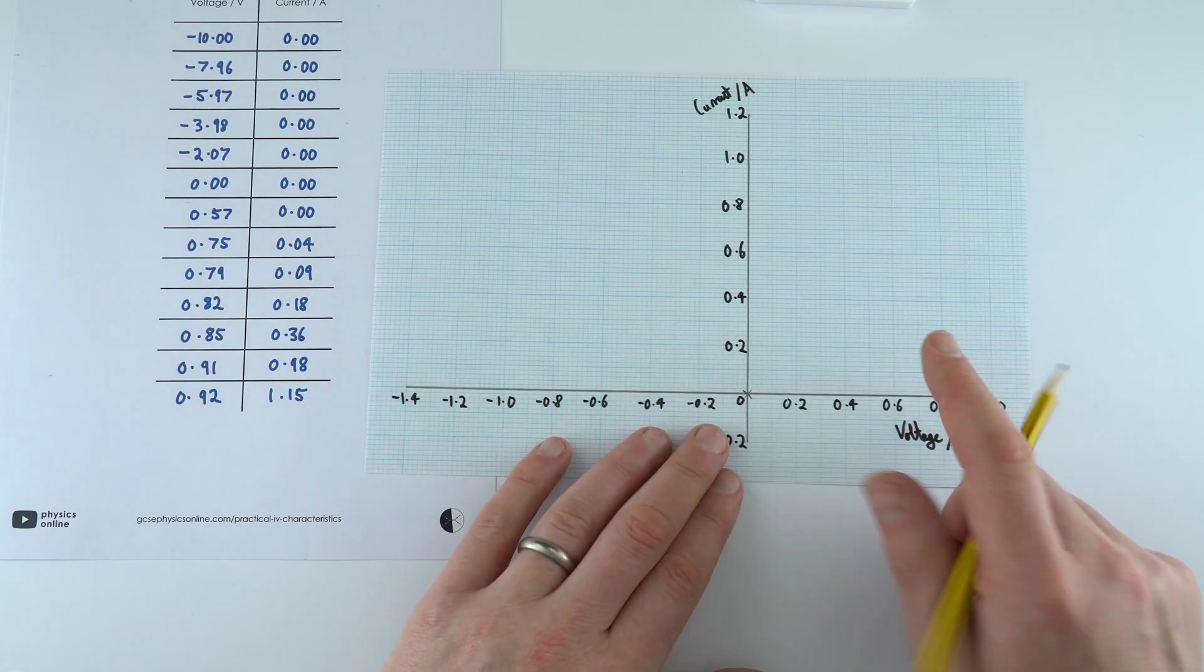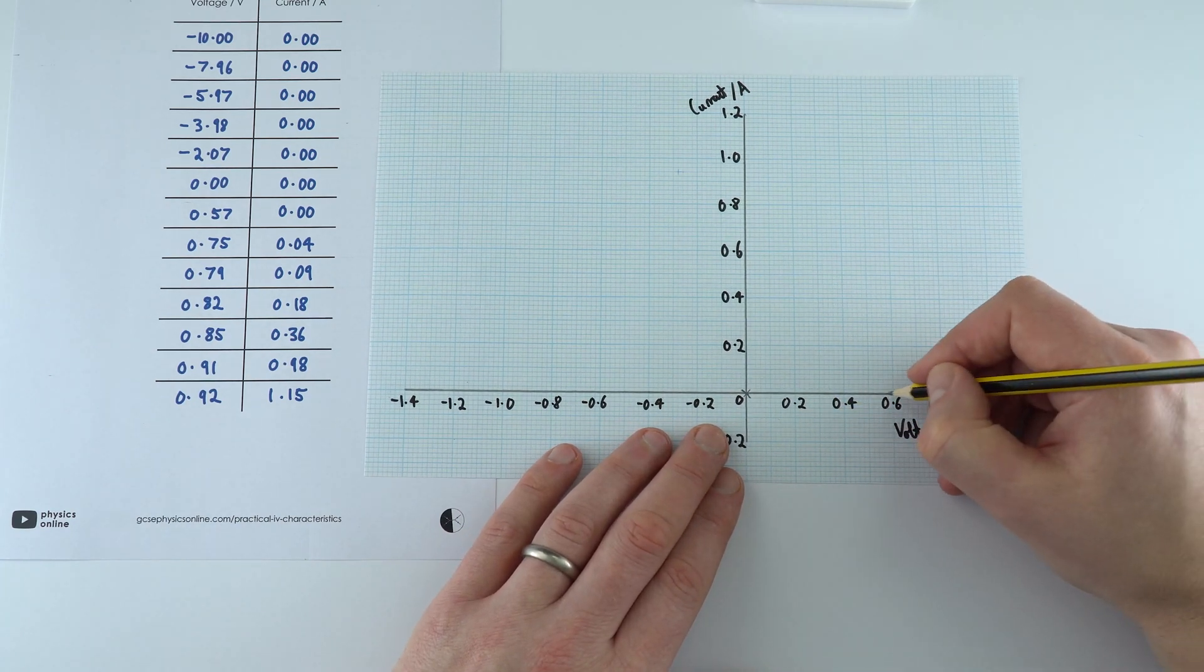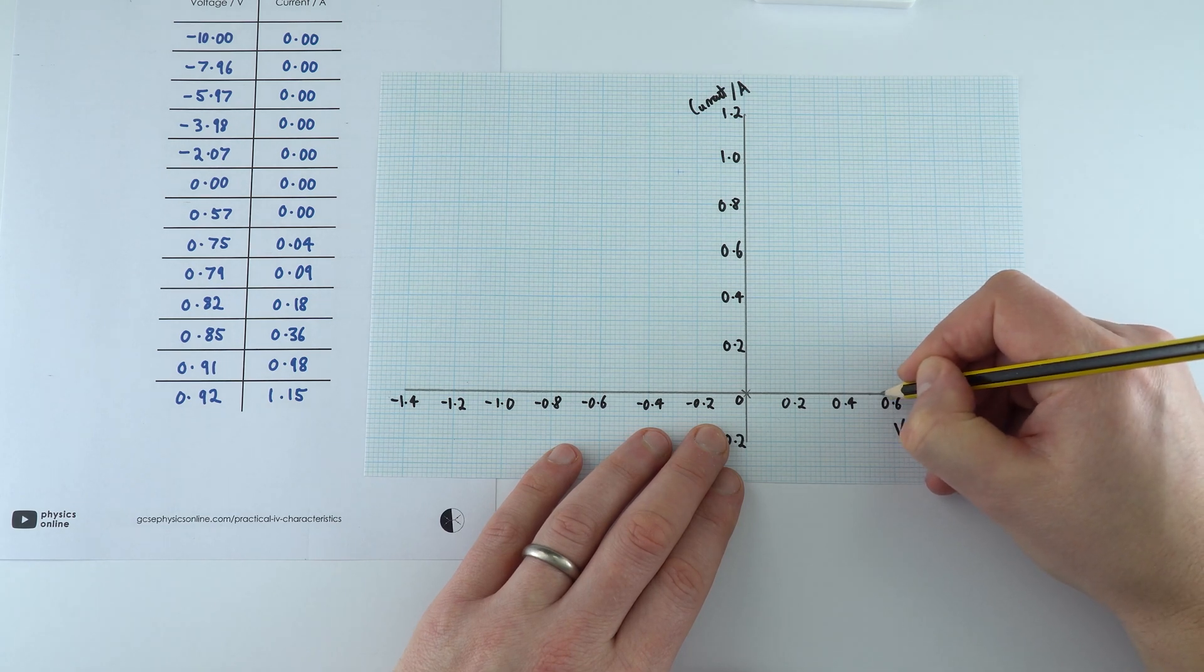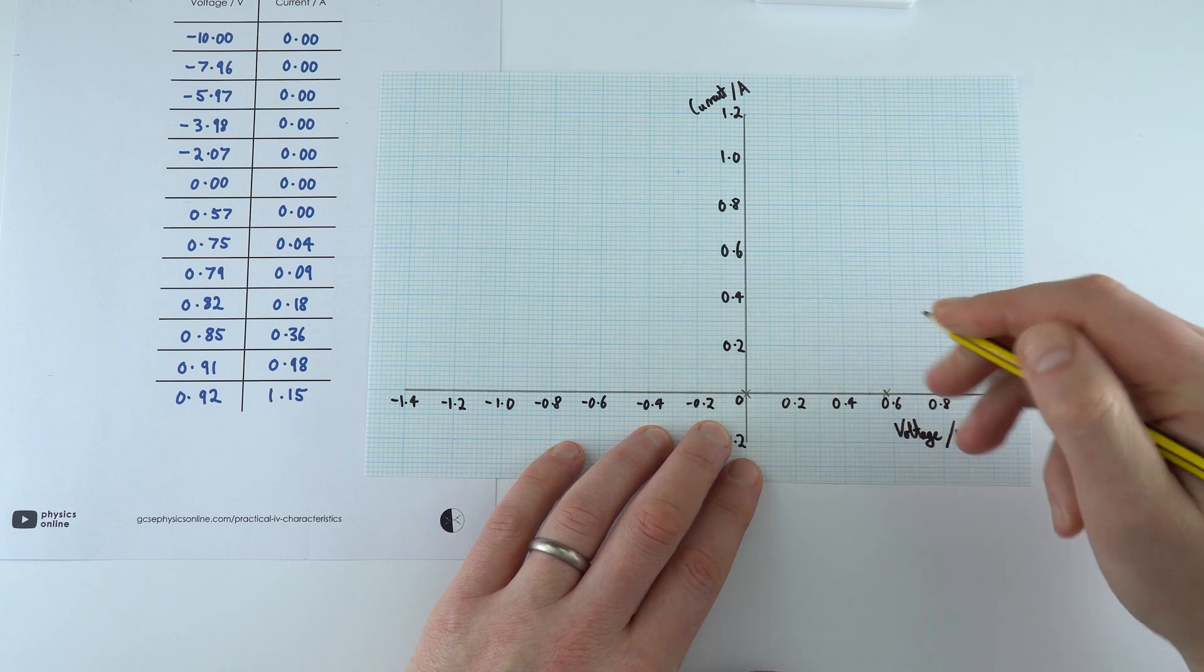When we get to a value of 0.57 volts, so that's going to be over here, so that's 0.5, this is 0.57 here. We also have a value of zero.